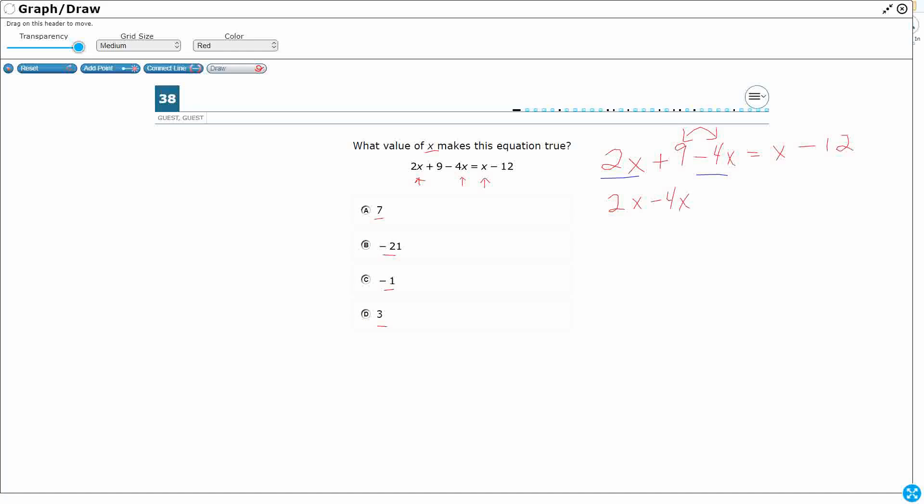So 2x minus 4x plus 9. Now I can look at those two. So 2x minus 4x, that's going to get me a negative 2x, and that's fine. And then I've got a plus 9 still. So it's a little bit simpler. I've got two terms on each side, but now I need to get the x's together.